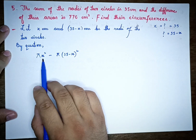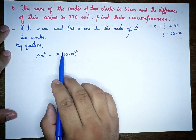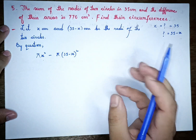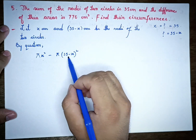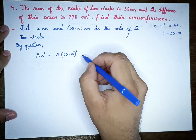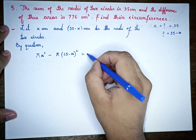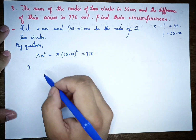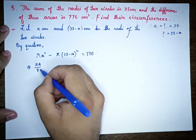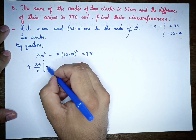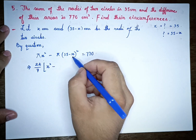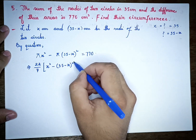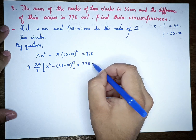The difference of areas gives us: pi x squared minus pi (35 minus x) whole squared is equal to 770. Using pi as 22 by 7, we get: 22 by 7 times [x squared minus (35 minus x) whole squared] equals 770.